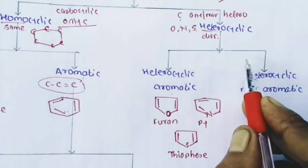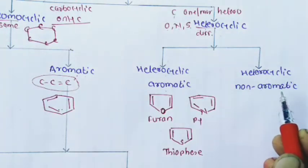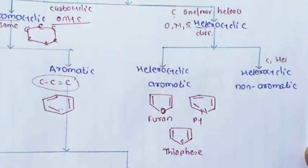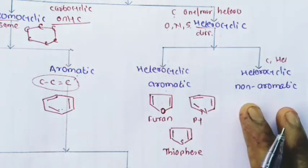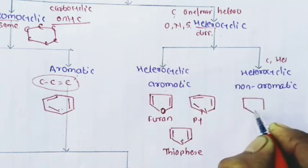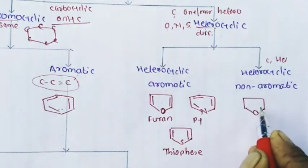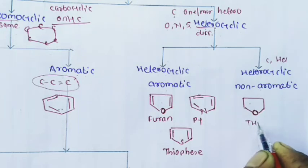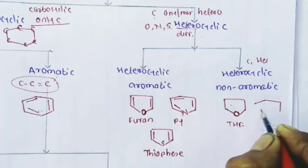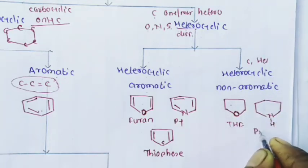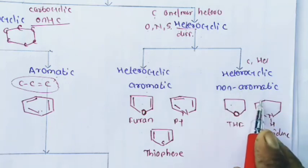Heterocyclic non-aromatic compounds are heterocyclic compounds that are not aromatic — there are no alternating carbon-carbon single and double bonds. For example, tetrahydrofuran is an alicyclic compound with oxygen as a heteroatom, and it is called a heterocyclic non-aromatic compound. Piperidine, which includes nitrogen in the alicyclic ring, is another example of a heterocyclic non-aromatic compound.